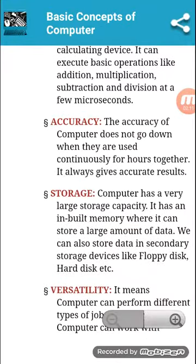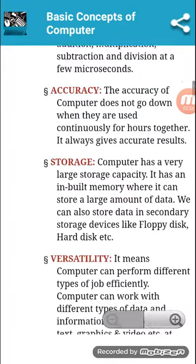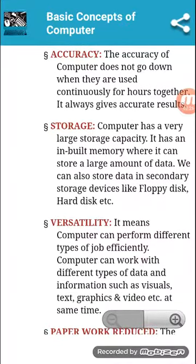The second characteristic is accuracy. The accuracy of a computer does not go down when it is used continuously for hours together — it always gives accurate results. The third is storage. A computer has a very large storage capacity with an inbuilt memory. We can also store data in secondary storage devices like floppy disk and hard disk.